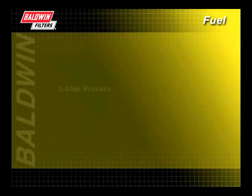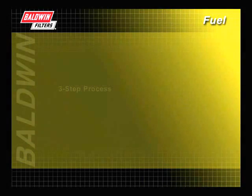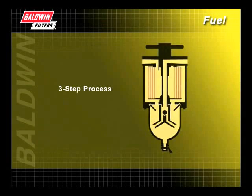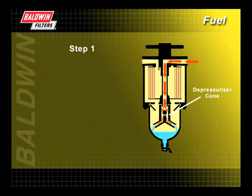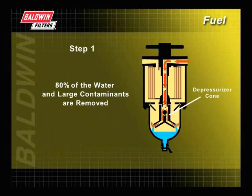The Baldwin-Dahl fuel-water separators offer an additional line of defense for applications where significant amounts of water need to be removed. These units use a three-step process to remove water and contaminants. When the fuel flows into the Dahl unit, it is spread out by a depressurizer cone. As the fuel leaves the cone, approximately 80% of the water and large contaminants are removed.